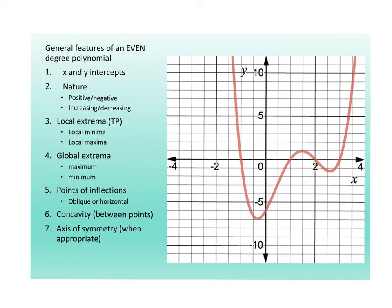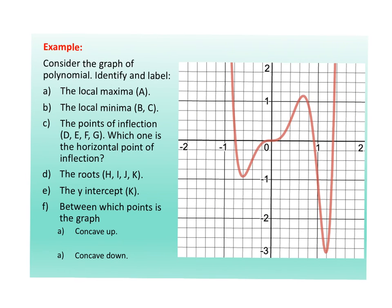Here's another polynomial to the power of 4. Is it even? You can work out the x and y intercepts, the nature, the local extrema — and this time we actually do have a global minimum. The global minimum would be this point here. I'm sure you can now recognize what is a point of inflection. There's no axis of symmetry for this one.